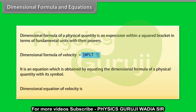It is an equation which is obtained by equating the dimensional formula of a physical quantity with its symbol. Let us take an example: Dimensional equation of velocity is V equals under brackets M to the power zero L T to the power minus one.